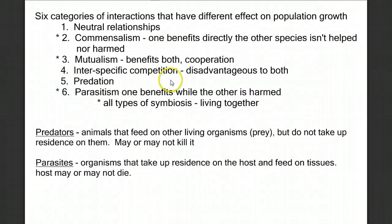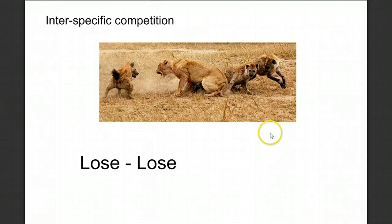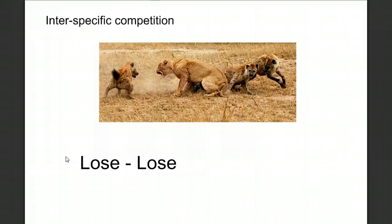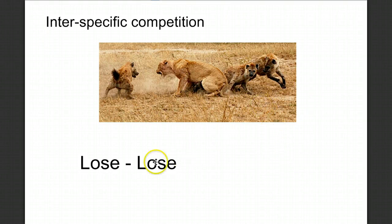Our next category is interspecific competition — inter meaning between specific species. Competition between species is disadvantageous to both, because the time and energy spent competing is wasted energy that could be used for finding food. Interestingly, interspecific competition isn't as robust as competition within species, because there's less overlap between niches — they're not fighting for the exact same resources as directly.